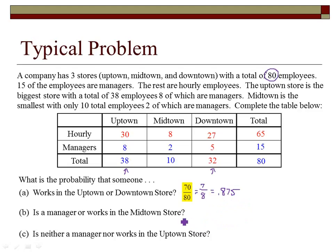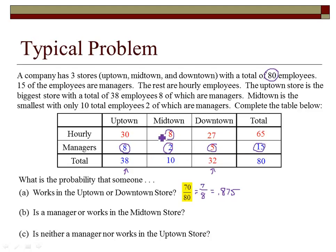For the probability of working in the midtown store or being a manager: the midtown store has 10 total employees and there are 15 managers. If I just add 15 and 10 to get 25, I end up counting the 2 midtown managers twice — that's where you have to be careful not to count the same value twice. So the correct count is 15 plus 8 non-midtown managers, giving 23 out of 80.